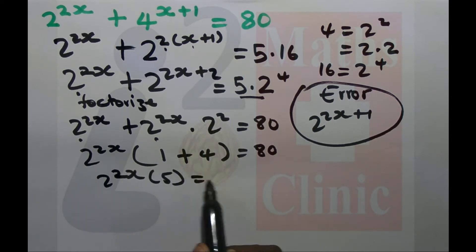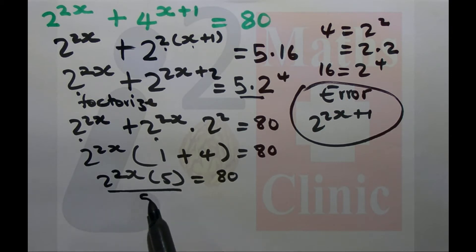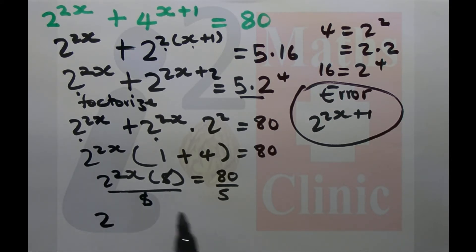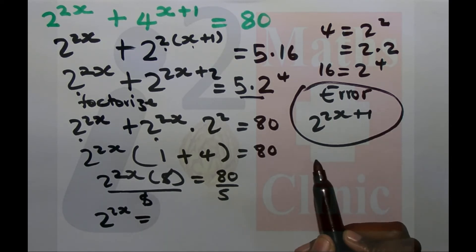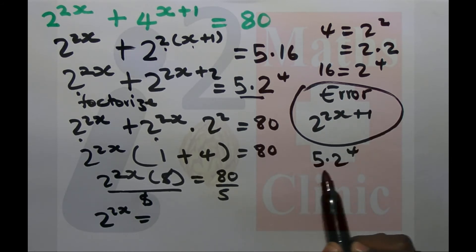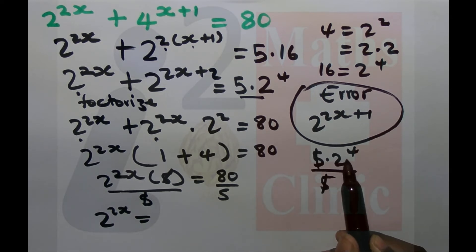Now divide both sides by 5. 80 divided by 5 equals 16. So 2 to the 2x equals 16. And 16 equals 2 to the 4, so 2 to the 2x equals 2 to the 4.